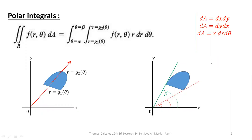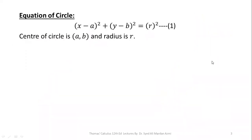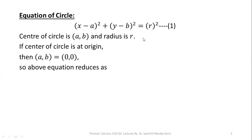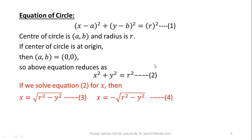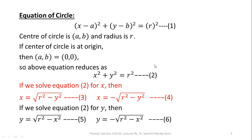After calculating the limits of R and theta, we will learn about the equation of a circle. The general equation of a circle is (x − a)² + (y − b)² = R², where the center is at (a, b) and radius is R. If the center is at the origin, i.e., a = 0 and b = 0, we get equation x² + y² = R². Solving for x gives equations 3 and 4, and solving for y gives equations 5 and 6.